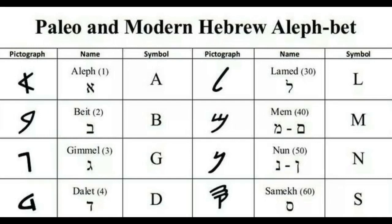Before we get started, I wanted to go over the alphabet once again and the pronunciations of each of the letters. As we already talked about in part 1, there are 22 letters in the Yahudiath Hebrew alphabet. This is how it looks in the Paleo, and this is how it looks in the Modern, as it's commonly known today, along with its common pronunciation.